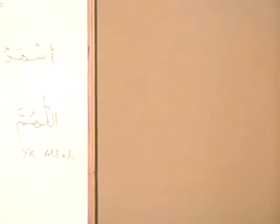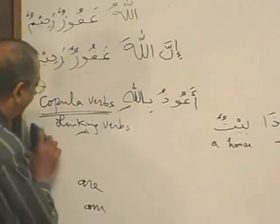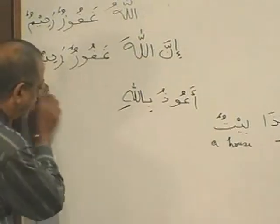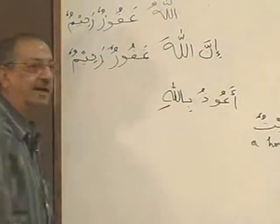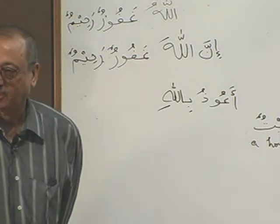Because the copula verbs are not in Arabic — linking verbs are not there. Ma haza — what is the answer? Haza baitun — this is a house. What is this? This is a house. Now I come to something here. Haza baitun — this is a statement: 'This is a house.'